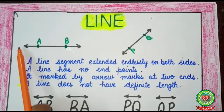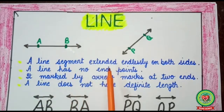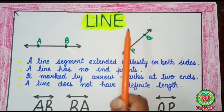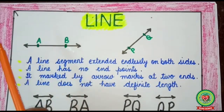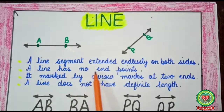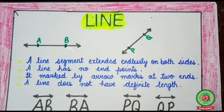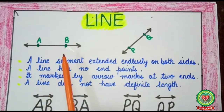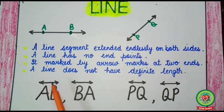Next is line. When you join two points it makes a line segment, but if you extend that line from both sides, that is known as a line. A line segment extended endlessly on both sides is known as a line. Since we can extend it from both sides, it has no end points. It is marked by arrow marks at both ends, and a line does not have a fixed length.